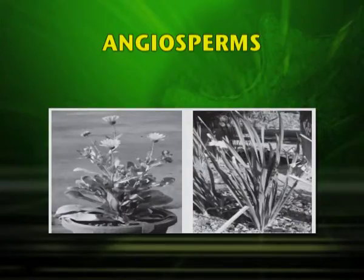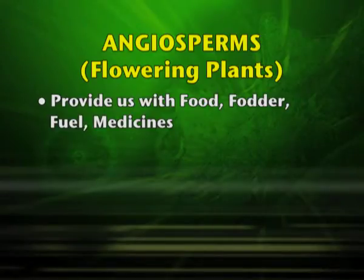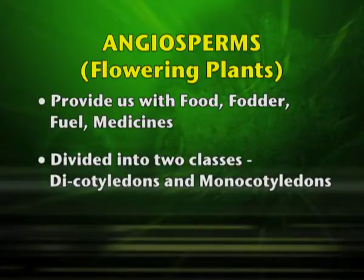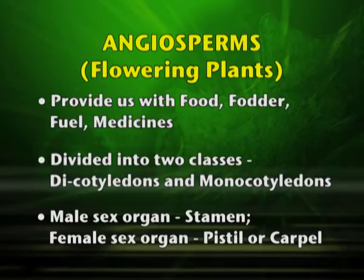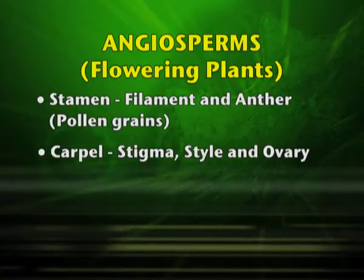Angiosperms are known as flowering plants and are of immense importance to us — they provide food, fodder, fuel and medicines. They are divided into two classes: dicotyledons and monocotyledons. Dicotyledons have two cotyledons and monocotyledons have one cotyledon. The male sex organ is the stamen and the female sex organ is the pistil or carpel. The stamen has a filament and anther, while the pistil is made up of stigma, style and ovary.